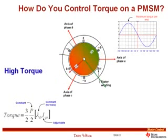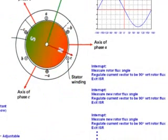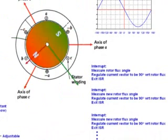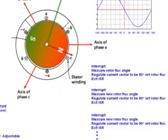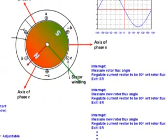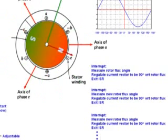To control torque, we don't change the angle of the stator current vector relative to rotor flux — we always keep it at 90 degrees for maximum torque per amp. Instead, we regulate the amplitude of the stator current vector. On a digital processor: get an interrupt, enter the ISR, measure the rotor flux angle, calculate the right phase A, B, and C current values to create a stator current vector 90 degrees from the rotor flux, apply voltages to regulate those currents, exit the ISR, and repeat roughly every 100 microseconds. That is the process of field oriented control.